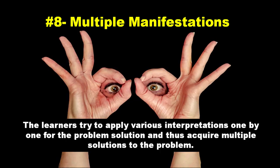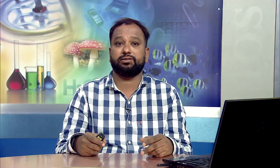The final principle is multiple manifestation. Here, learners try to apply various interpretations of the problem solution one by one, and thus acquire multiple solutions to the problem. They also gain multiple manifestations of the same interpretation. New conceptions should not only solve predecessors' difficulties but also have the potential to be extended and open up new areas of inquiry. Students acquire transferability by seeing multiple manifestations of the same idea, and are encouraged to use the same idea at different times and in various contexts.